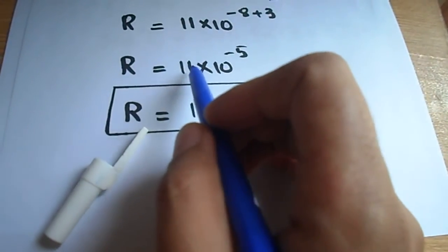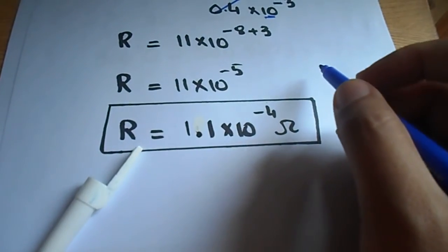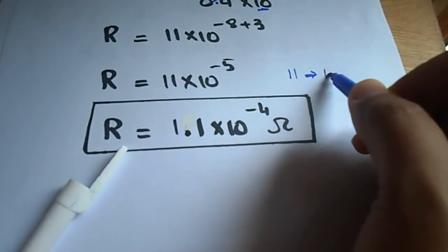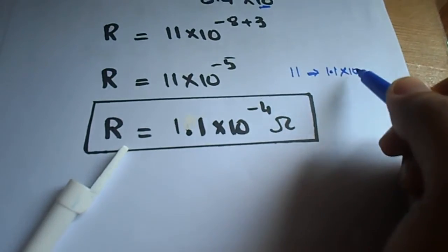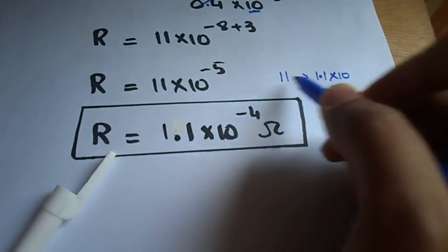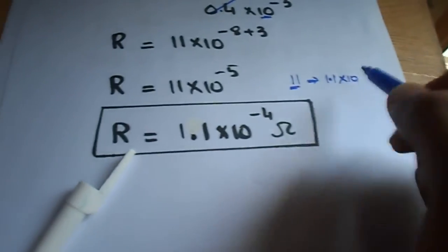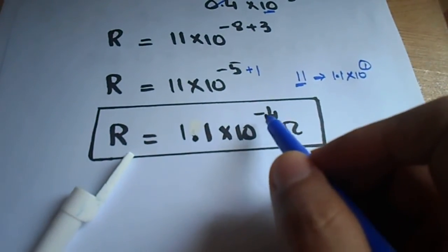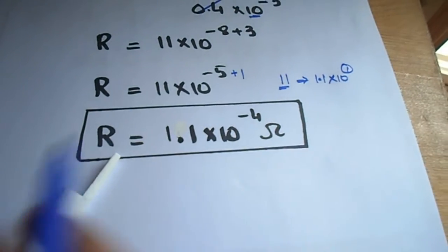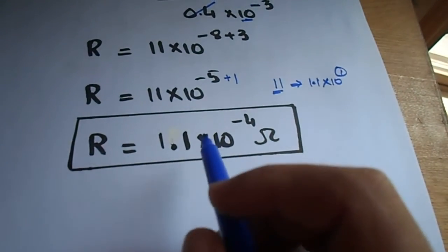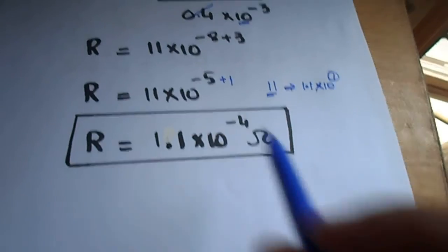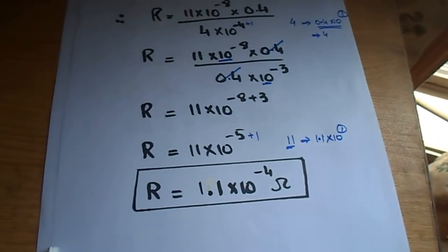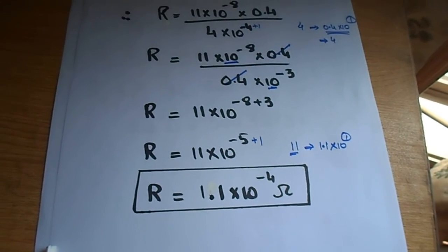If we shift the decimal point one digit for proper scientific notation, we will do 1.1 multiplied by 10, because 1.1 multiplied by 10 will be equal to 11. So the final answer is R equals 1.1 into 10 to the power minus 4 ohm. So this is the answer of this question, and thank you very much and see you soon.